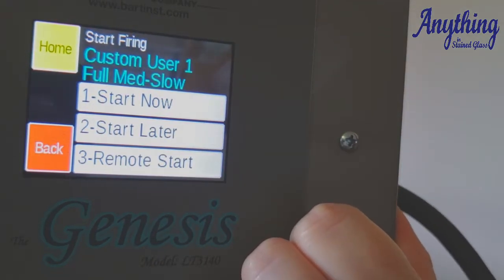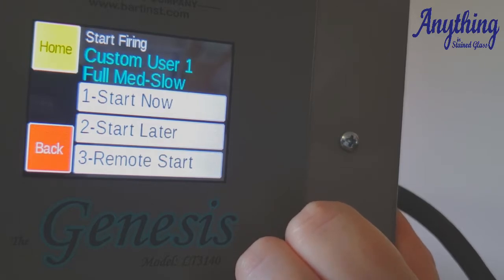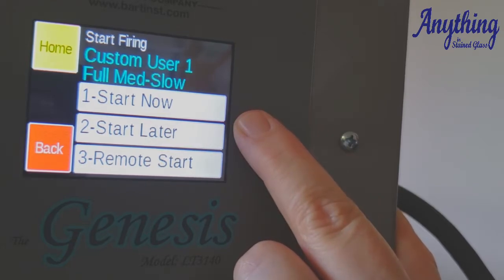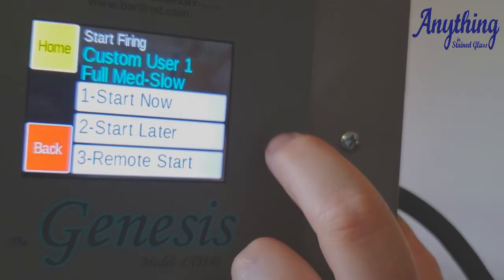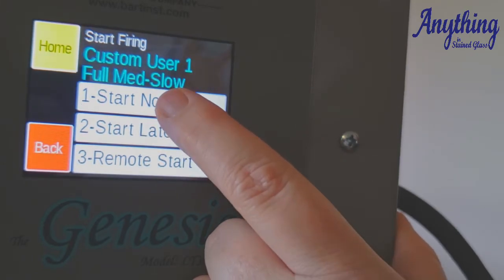The Genesis controller has a start now, start later, and a non-functioning remote start. The two we need to look at are the start now and start later. If you want to program a delay in there, if you want it to start in a couple hours, you press the start later and program the number of hours you want it to hold before it starts. But we're just going to start now.